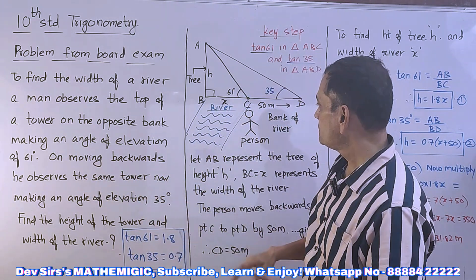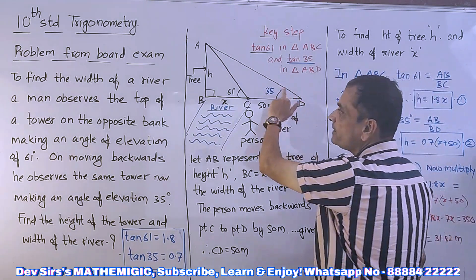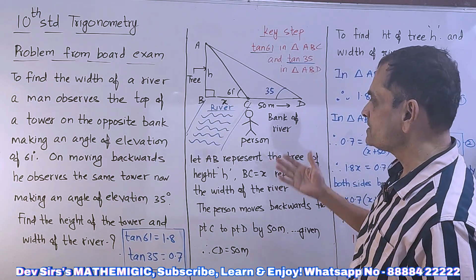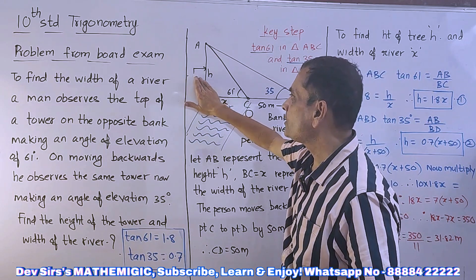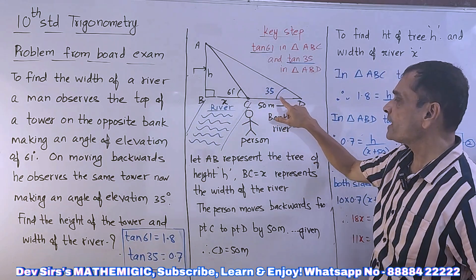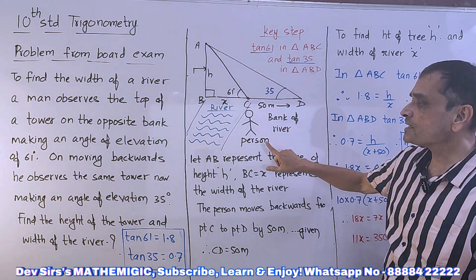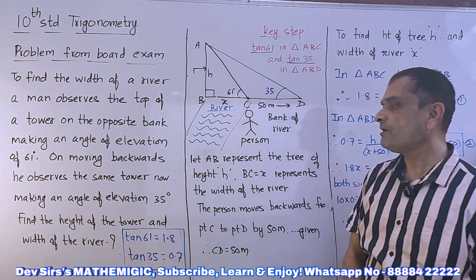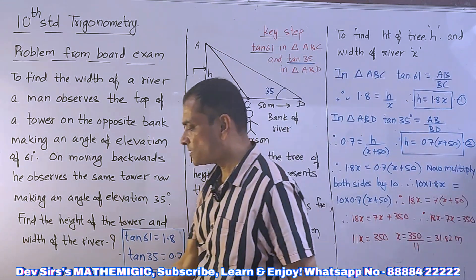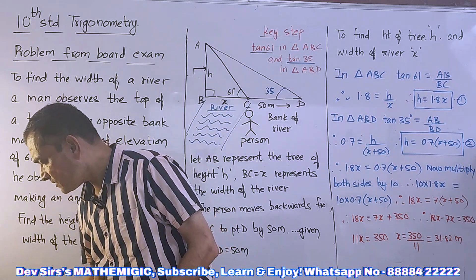On moving backwards, the person comes back to point D and from point D he again observes the same tower making an angle of elevation of 35 degrees. The question asks us to find the height of the tower and the width of the river — tower ki height kya hai aur width kya hai. So we need to find both these values.